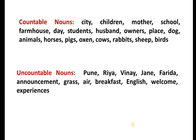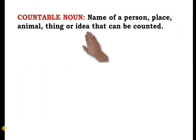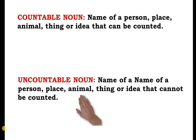Now we are going to see another category: countable and uncountable nouns. Countable nouns are those where you can say one, two, three, four — you can put a number before them and it makes sense. Uncountable nouns are those where you cannot put a number, or if you do it makes no sense. For instance, we don't say 'one India, two Indias'. Right English does not give a number to proper nouns such as Riya, Vinay, or Jane. A countable noun is the name of a person, place, animal, thing or idea that can be counted. An uncountable noun is the name of a person, place, animal, thing or idea that cannot be counted.